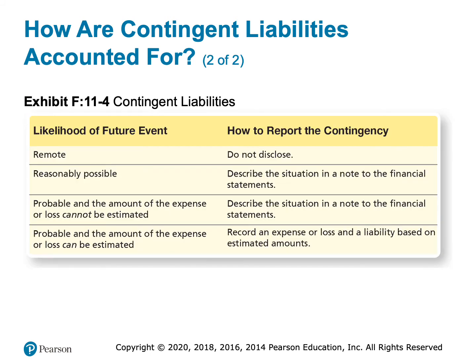This chart helps us out. If the likelihood that we're going to lose is deemed remote — like there's no possible way — then we don't have to do anything; we can just ignore it. In real life, I would caution you against just ignoring it, because there's always a likelihood we're going to lose. There are lawsuits people win that are baffling. If it's reasonably possible that we could lose, then at minimum we need to describe the situation in the notes to the financial statements.